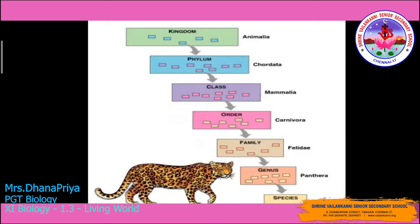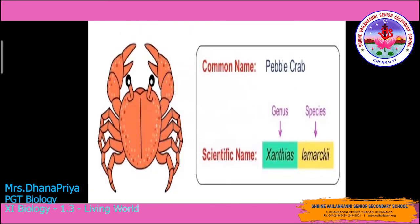Here is the taxonomy hierarchy of the tiger: kingdom Animalia, phylum Chordata, class Mammalia, order Carnivora, family Felidae, genus Panthera, and species tigris. So the scientific name is Panthera tigris.